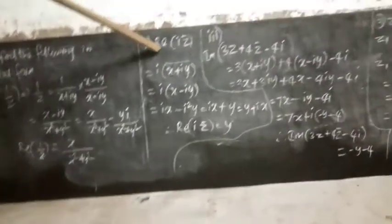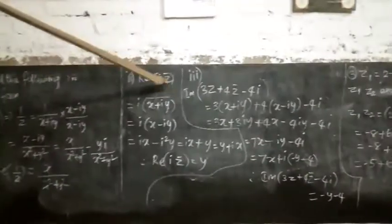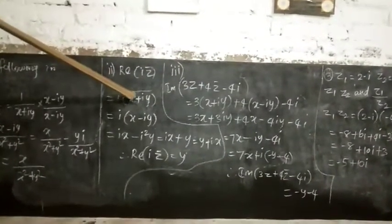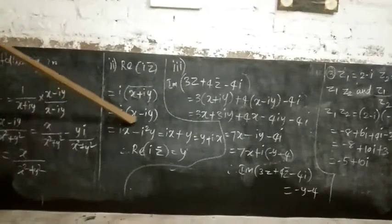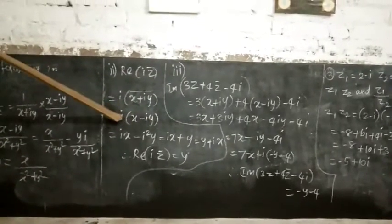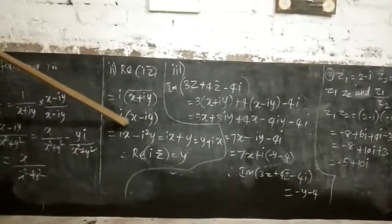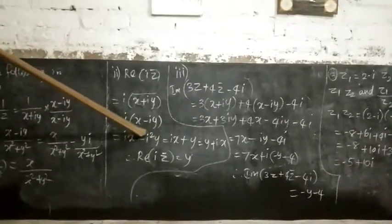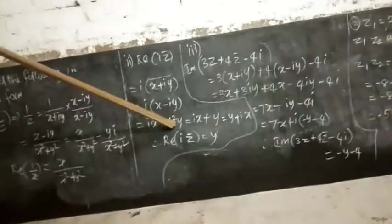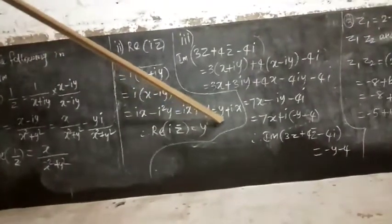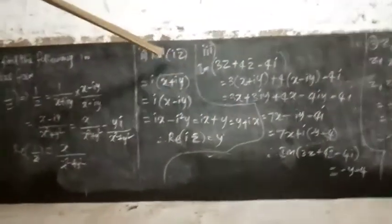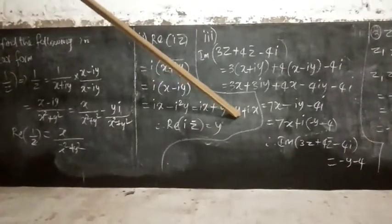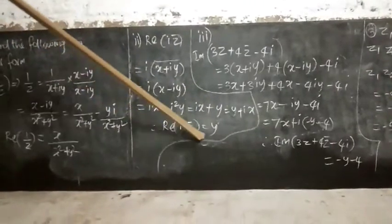Second subdivision: real part of i·z̄. Here z̄ means taking conjugate of z equals x plus iy, giving x minus iy. So i·(x - iy) equals ix minus i squared·y. Since i squared equals minus 1, this becomes ix plus y, which equals y plus ix. Therefore, real part of i·z̄ equals y.